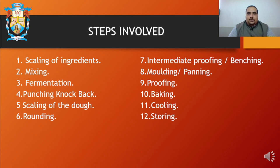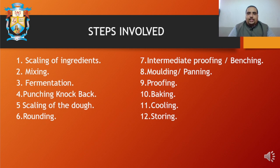Let's go across the different steps involved in the bread making process. First is scaling of ingredients, second is mixing of ingredients, third is fermentation, fourth is punching or knockback, fifth is scaling the dough, sixth is rounding, seventh is intermediate proofing or benching, eighth is molding or panning, ninth is proofing, tenth is baking, eleventh is cooling, and twelfth is storing.